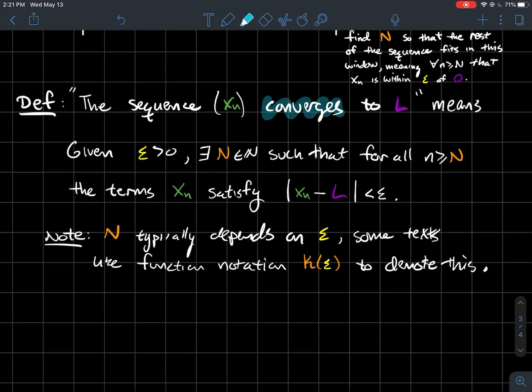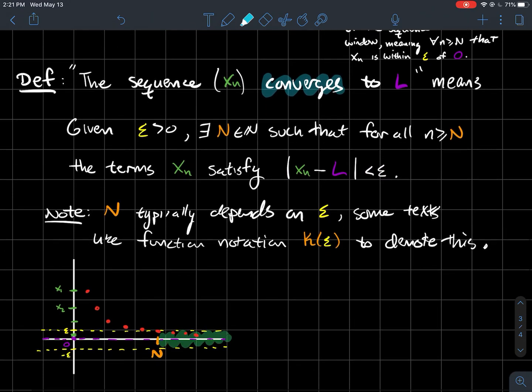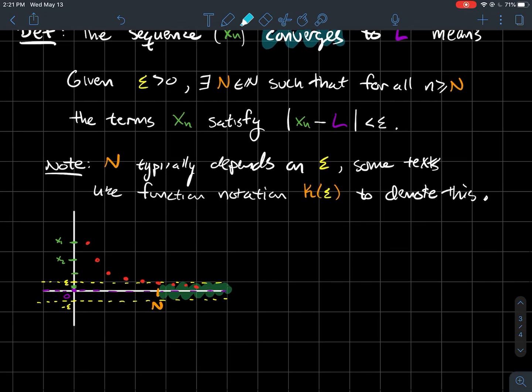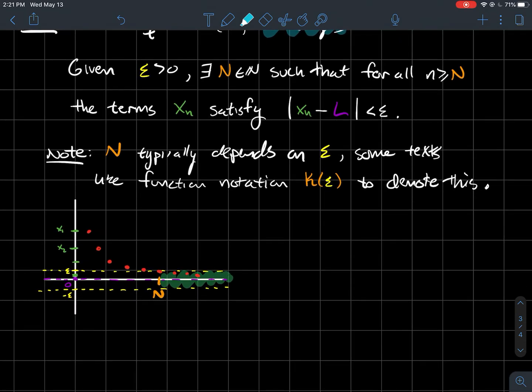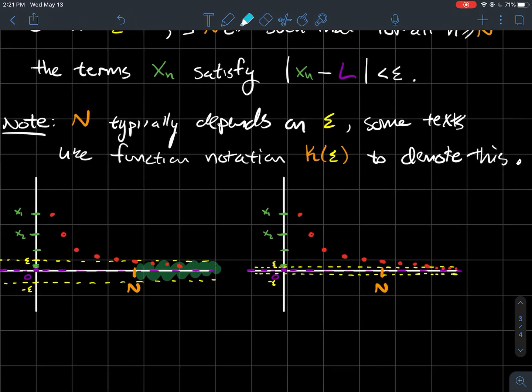Now what I want to do is draw you a picture to talk about the note at the bottom. Here's my picture. It looks like I have found an N such that every red point to the right of that orange number N is within that little yellow window. But what if I give you a picture with a smaller epsilon? That little yellow window is harder to get into. And what I hope you notice is that orange N that worked before doesn't work for this smaller epsilon.